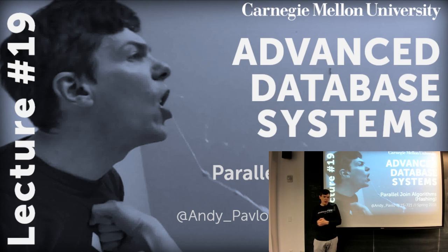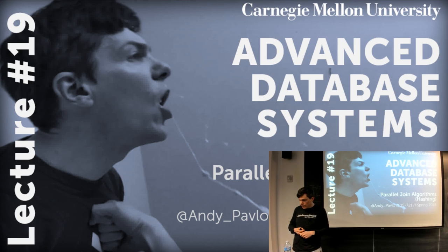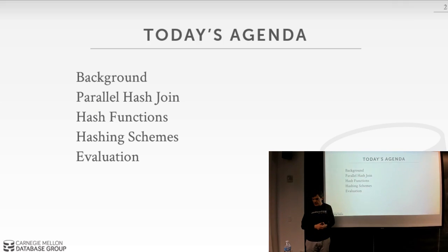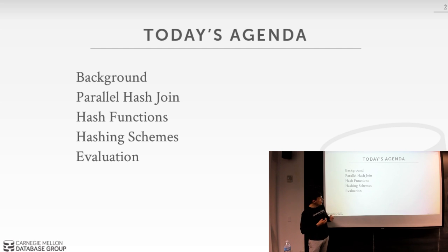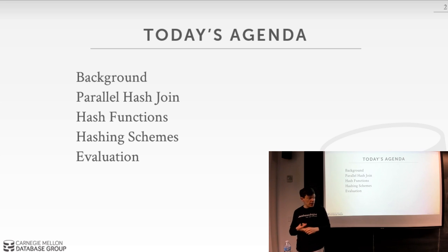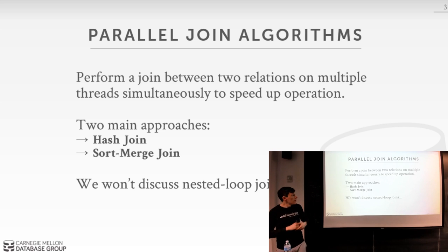Today is the first of a two-part lecture on joins. We'll focus on parallel hash joins because these are the most common ones, and next Monday we'll cover sort-merge joins. For today's class, we'll start with the background of joins, then go into detail on how to do a parallel hash join, and the two major design decisions: the hash function and the hashing scheme. We'll finish off with an evaluation.